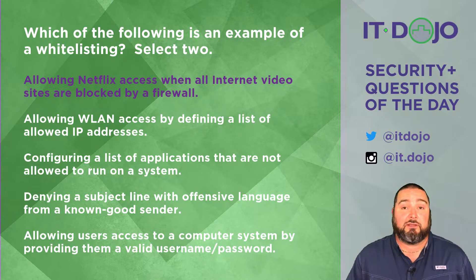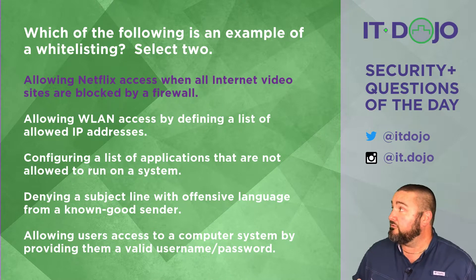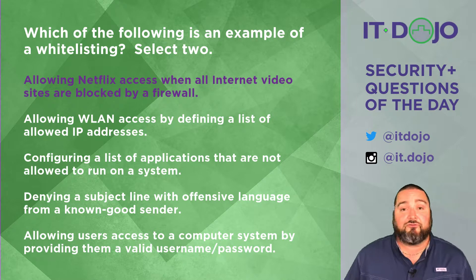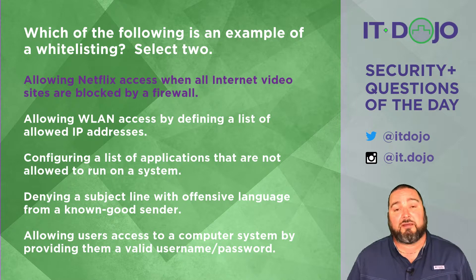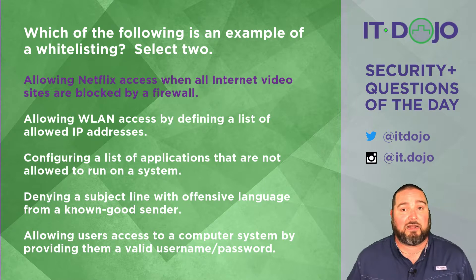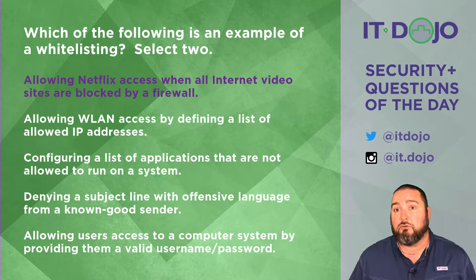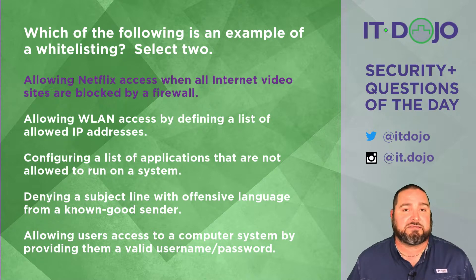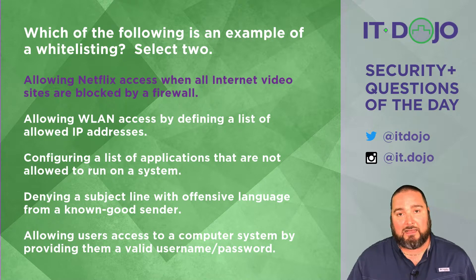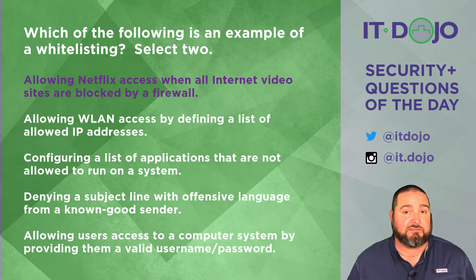On to more answer choices. The third answer choice says configuring a list of applications that are not allowed to run on a system. No, that's blacklisting. We're looking for whitelisting examples. Saying what's not allowed is blacklisting; saying what is allowed would be whitelisting. And that's not what this answer choice says.